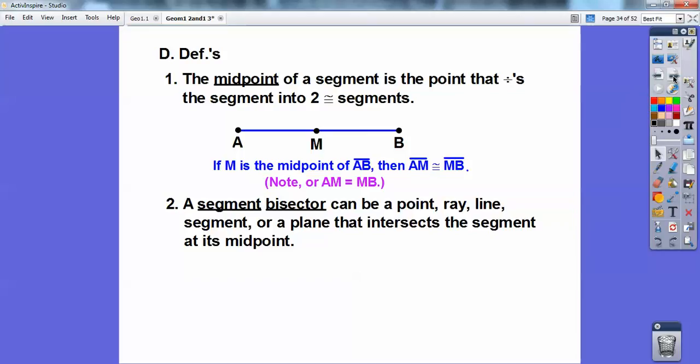So segment bisector can be a point, so here's a, this could be a, this could be a segment bisector right here. It could be a ray, so think of a ray that goes, say I have a point right here, and it goes in that direction. It goes on forever and ever and ever up there. It could be a ray. It could be a line, so here's a line that goes forever through there. So it's a segment bisector, could be a plane, can you see like a, like a piece of paper, can you see a piece of paper slicing this guy right in half? So anything that goes right through the midpoint is called a segment bisector.